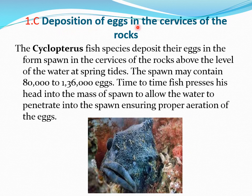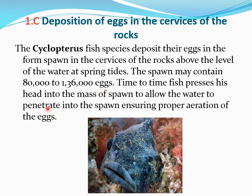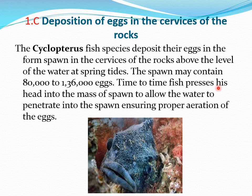Next is deposition of eggs in the crevices of rocks. As shown in the diagram, the Cyclotateras fish deposits its eggs in the crevices of rocks. The number of eggs can be very large — from 80,000 to 1,36,000. The fish buries its head among the eggs so that water can penetrate the spawn. Time to time the fish presses its head into the mass of spawn to allow water to penetrate, ensuring proper aeration of the eggs.